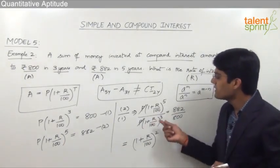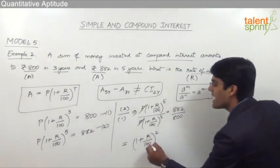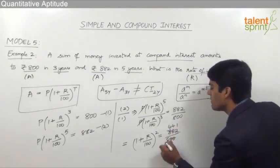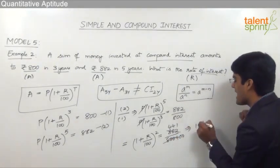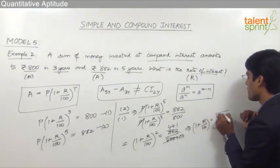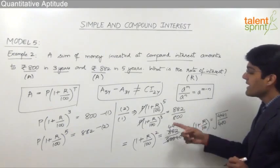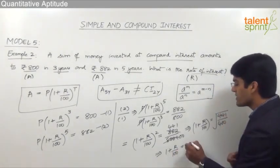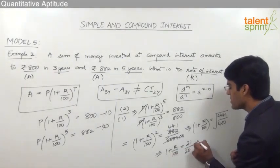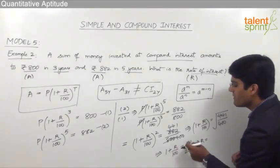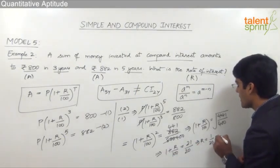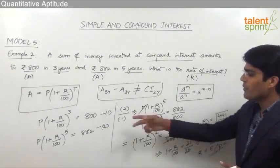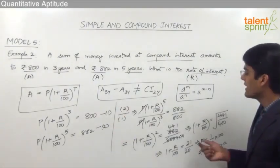This is like a^5 divided by a^3 equals a^(5 minus 3), which is a^2. So (1 plus r by 100) whole power 2 equals 882 by 800, or simplified, 441 by 400. Applying square root on both sides, we get 1 plus r by 100 equals 21 by 20, since root of 441 is 21 and root of 400 is 20. From this, r equals (21 by 20 minus 1) into 100, which equals 1 by 20 into 100, giving 5. So the rate of interest is 5 percent per annum.